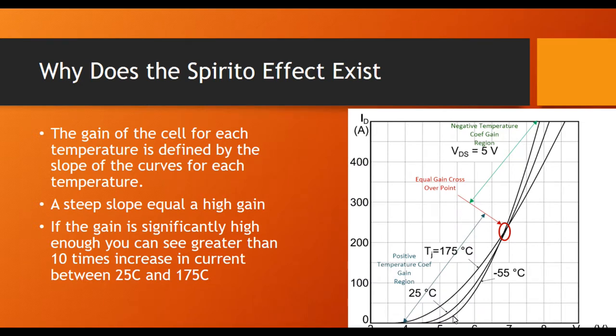Now this is where it gets interesting. If you have a really high gain, what happens is that you can get a significant large increase in current through the cell with temperature rise.